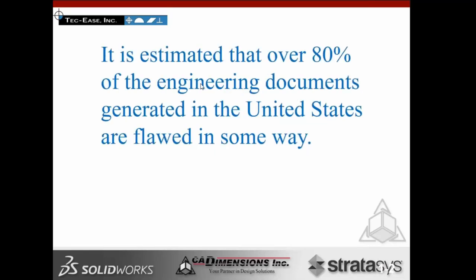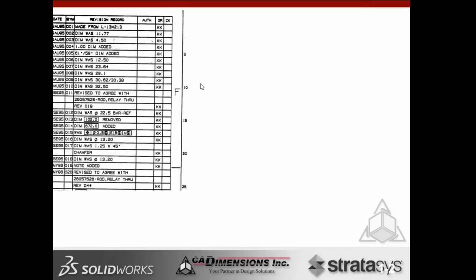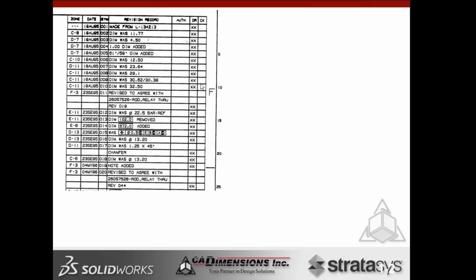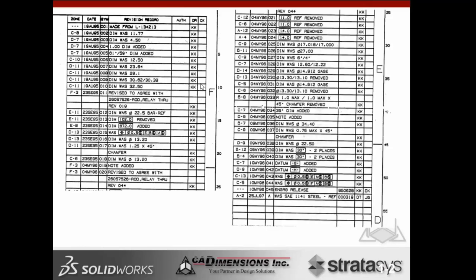It's estimated that over 80% of engineering documents generated in the United States are flawed in some way. That doesn't mean airplanes don't fly — your parts do function — it's just costing a lot more money. We have to ask ourselves: how many revisions does it take to get it right? I once had an engineer tell me revisions are cheap — but everywhere I've worked, revisions were not cheap.